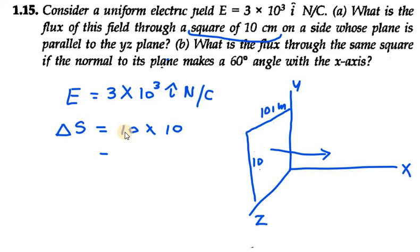Now we need to convert this into meter, so when you convert this you will get 10⁻² meter square. This is the area of the square. Since normal to the square is along x axis, the normal is along x axis as you can see.